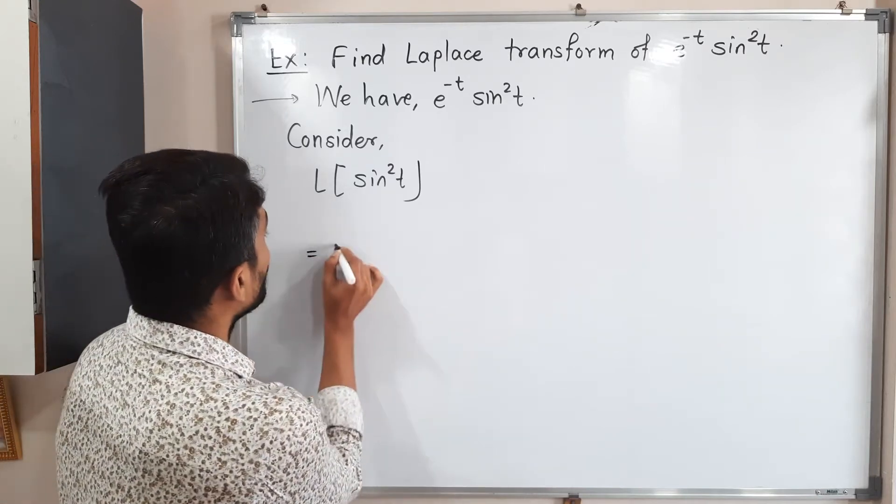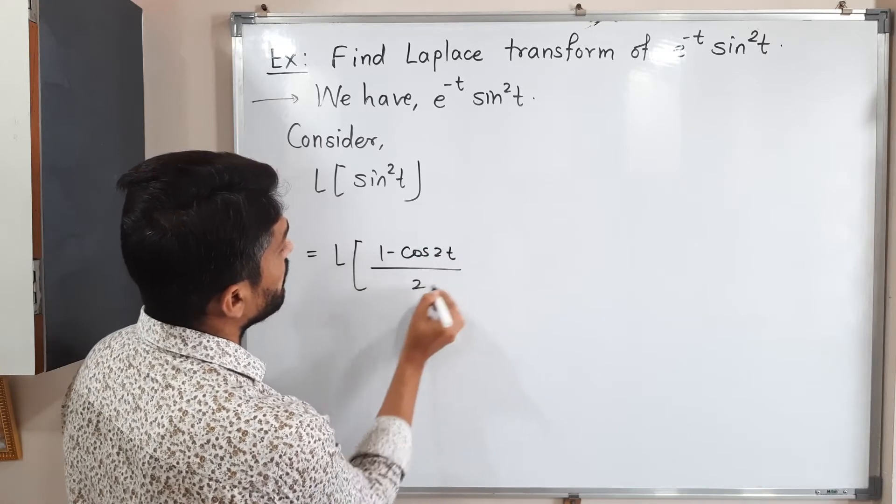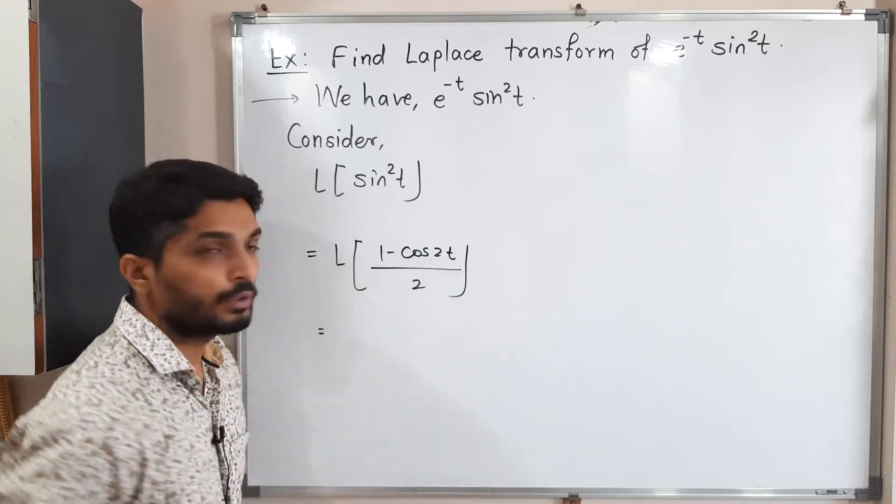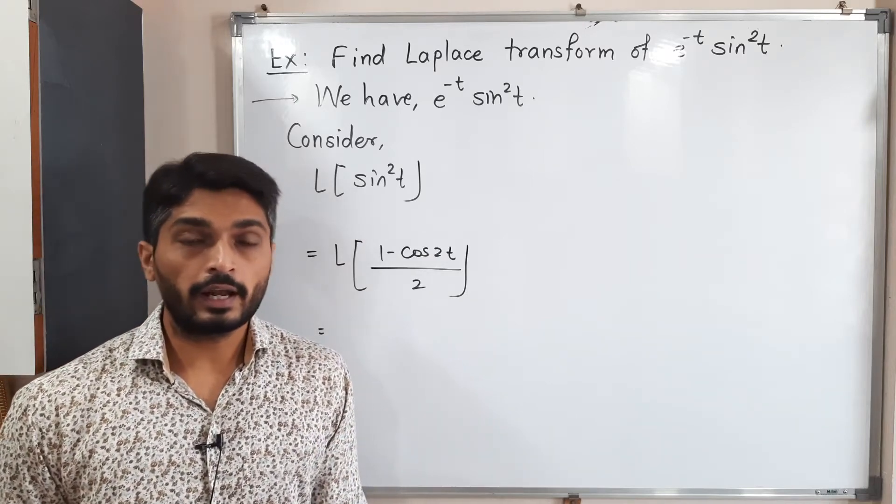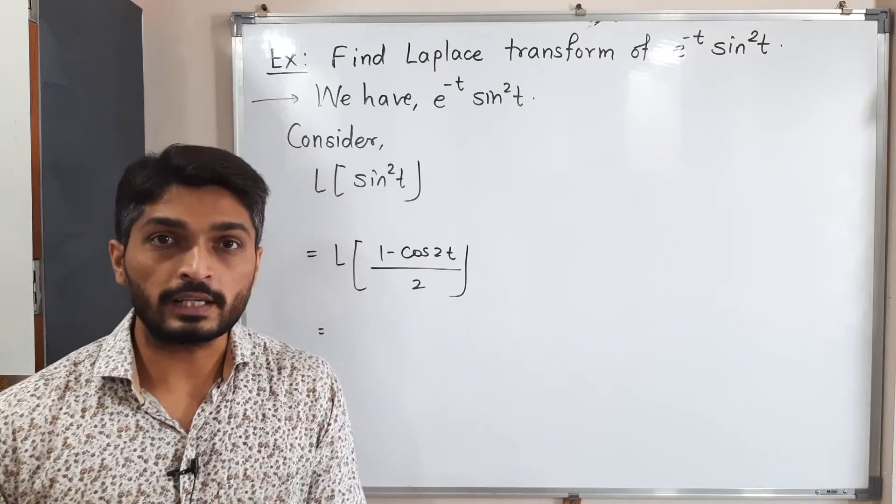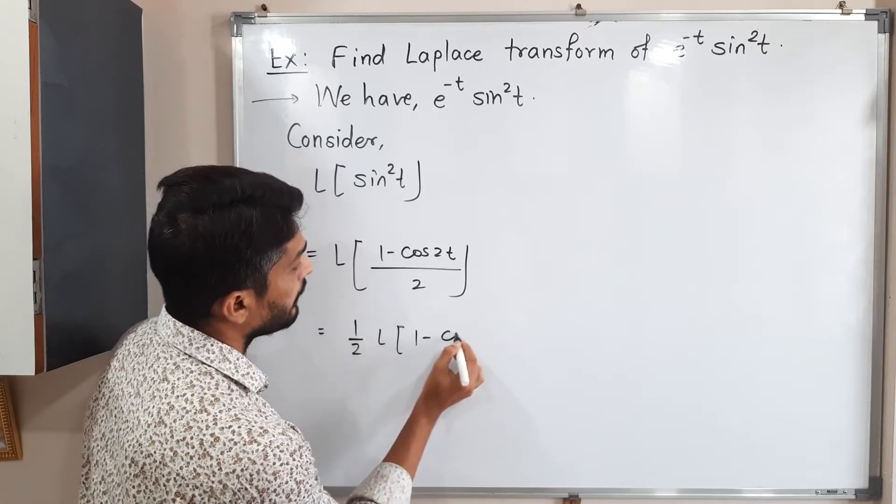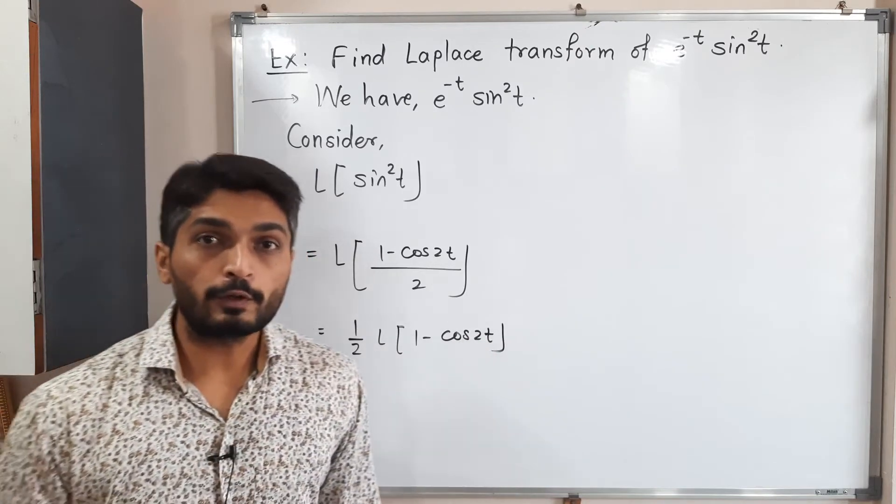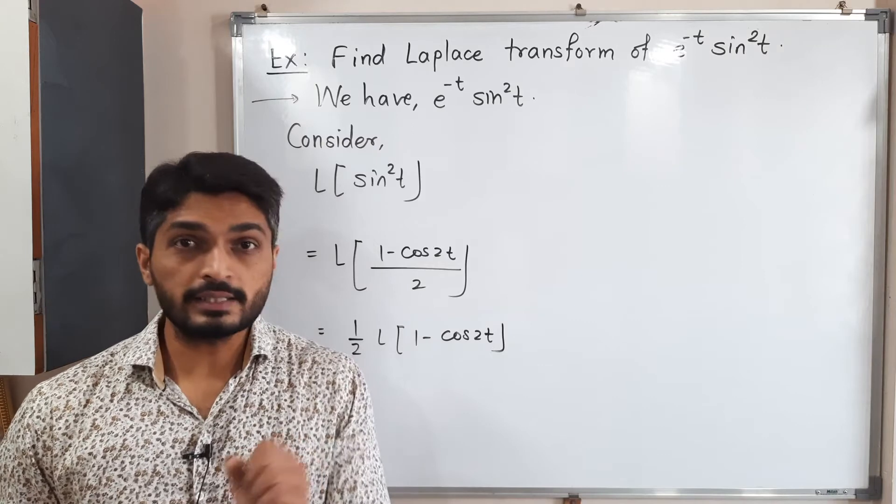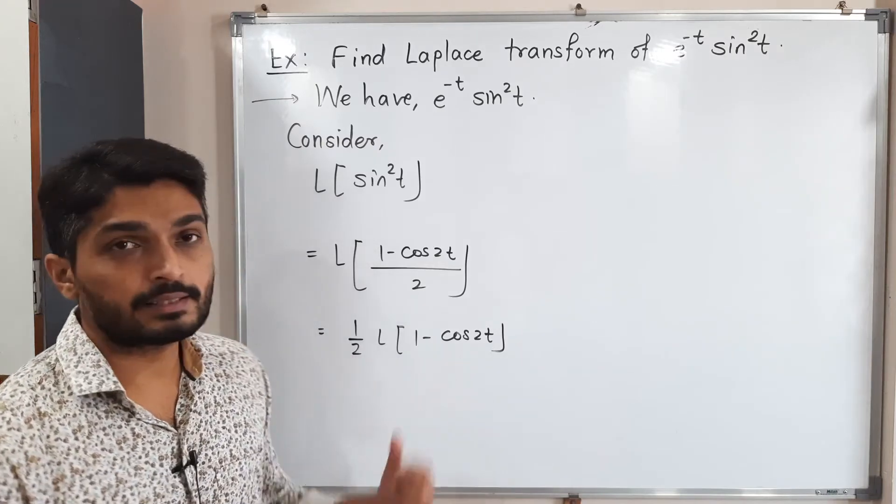So this is equal to Laplace of 1 minus cos 2t divided by 2. So this is equal to: 2 is in denominator which is a constant and constants we always take outside. So that 1 by 2 will come outside. Laplace of 1 minus cos 2t. We know the property of Laplace that when minus sign is there, we take separate Laplace.